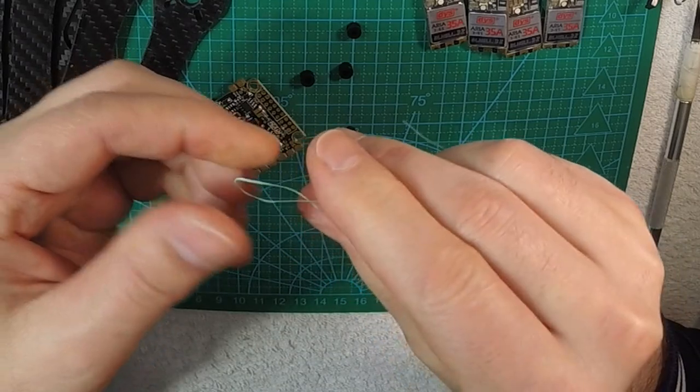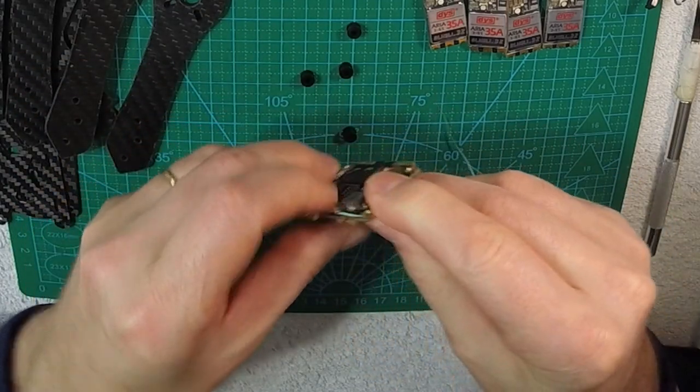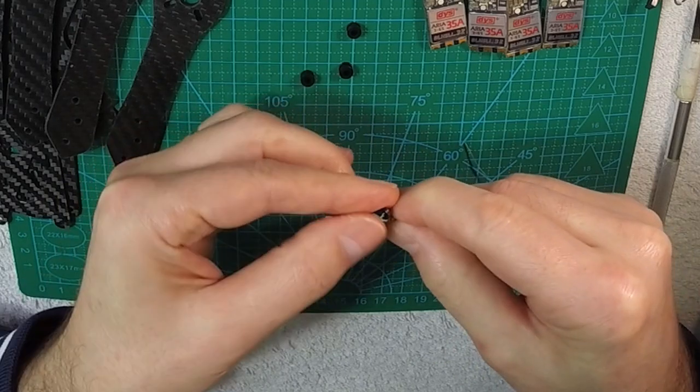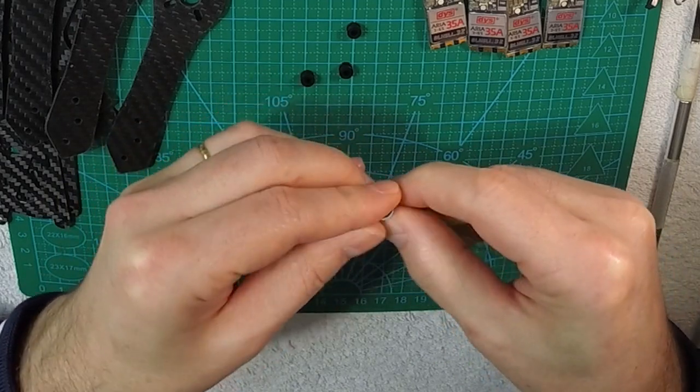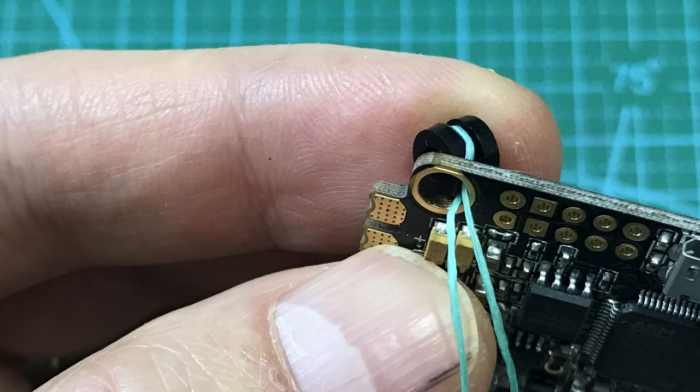Take the dental floss, fold it and put it through the hole. Pass it around the damper. Attach the lower end of the damper into the hole.